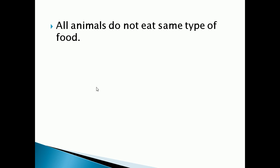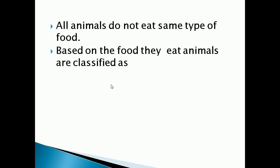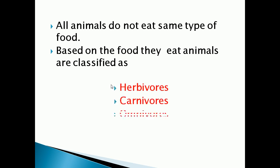All animals do not eat the same type of food. Based on the food they eat, animals are classified as herbivorous, carnivorous, omnivorous, and decomposers.